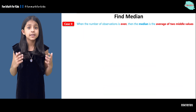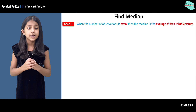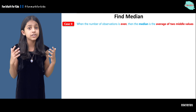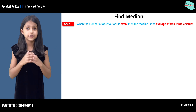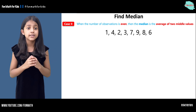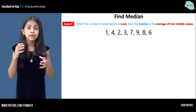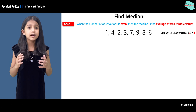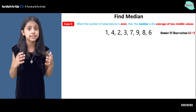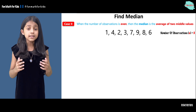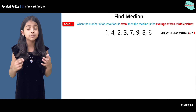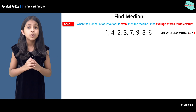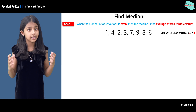Let's find the median in case two. When the number of observations is even, then the median is the average of two middle values. Here we have a data set: one, four, two, three, seven, nine, eight, and six. There are eight elements in this set. Eight is an even number, so that means there are going to be two middle values. In order to find the median, we are going to follow a few steps.